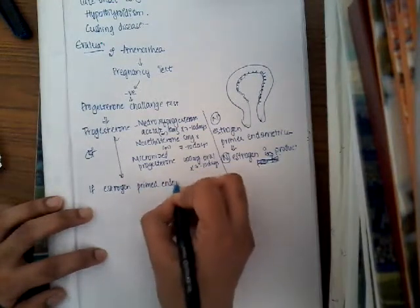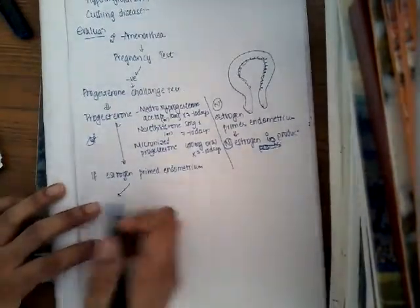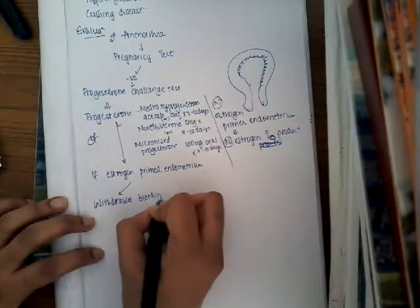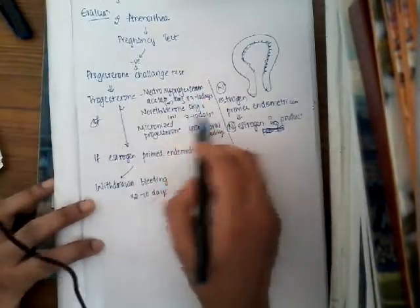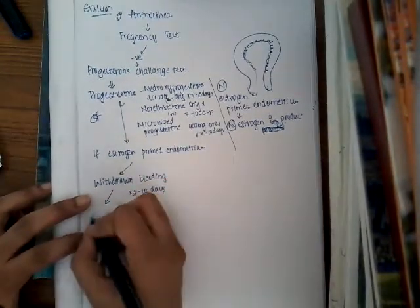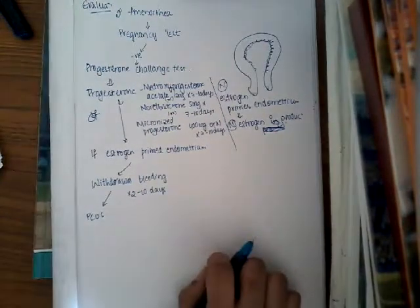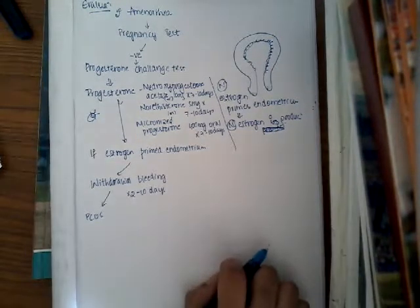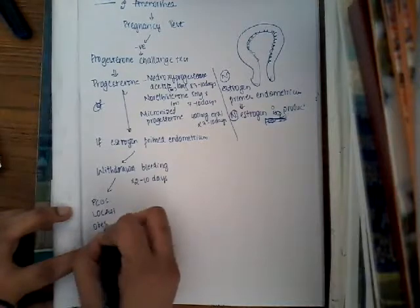After completion of the dose, withdrawal bleeding can be seen for 2 to 10 days. If withdrawal bleeding is seen, it can be due to PCOS — polycystic ovarian disease. This shows that estrogen is priming the endometrium, so there is no problem in the endometrium or estrogen. It can indicate PCOS, late-onset congenital adrenal hyperplasia, or obesity.